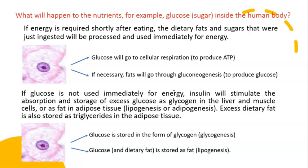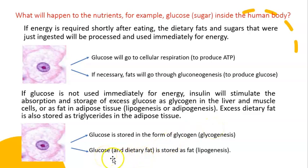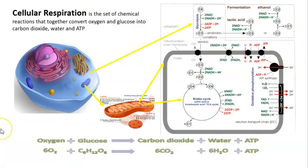Excess glucose can also be stored as fat in the adipose tissue through a process called lipogenesis. Excess dietary fat is also stored as triglycerides in the adipose tissue. Glucose is stored in the form of glycogen by a process called glycogenesis, or dietary fat or glucose through a series of processes will be stored as fat.